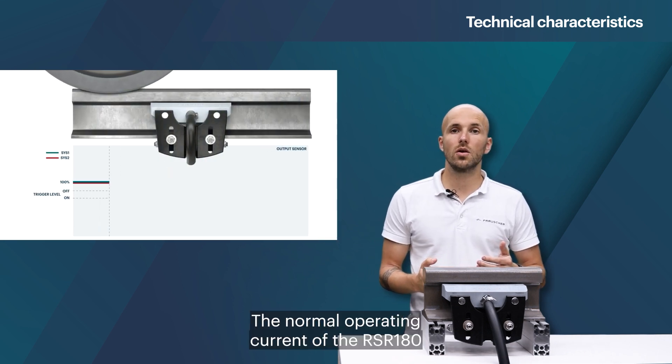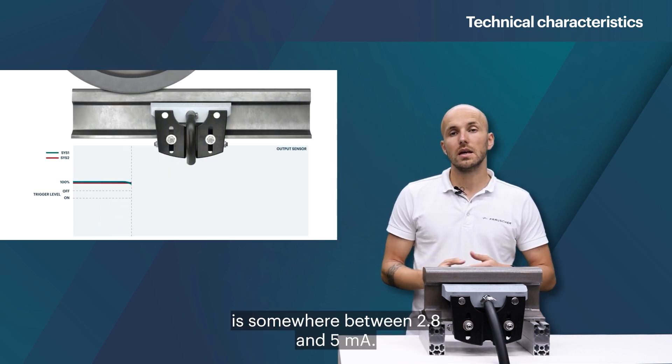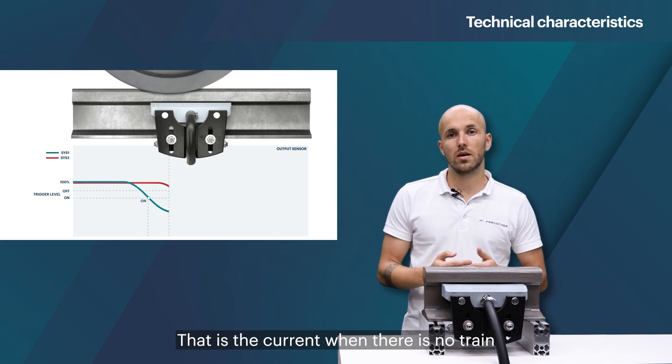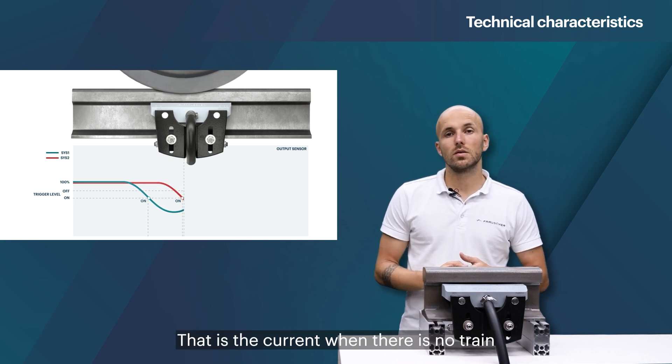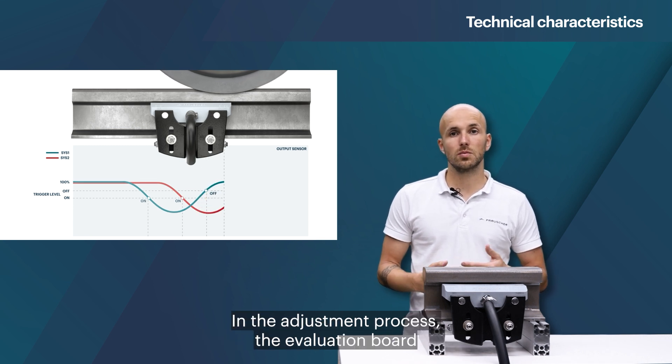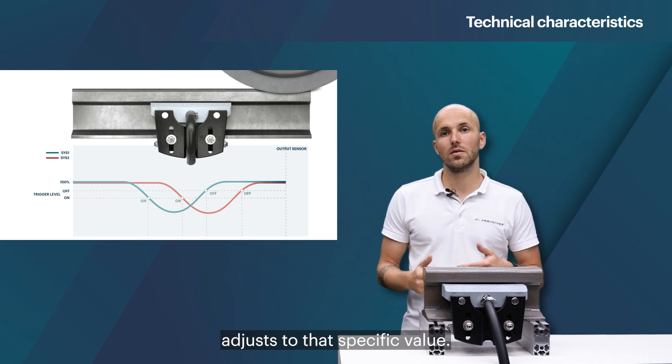The normal operating current of the RSR 180 is somewhere between 2.8 and 5 milliamps. That current is when there is no train or metal object in the proximity of the wheel sensor. In the adjustment process, the evaluation board adjusts to that specific value.